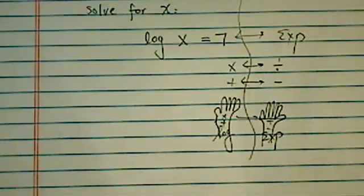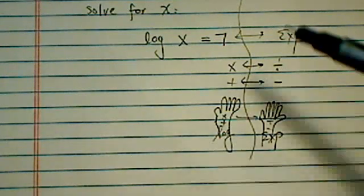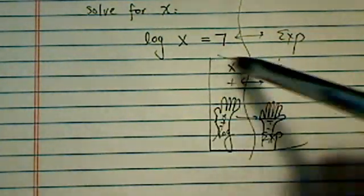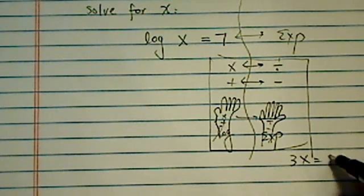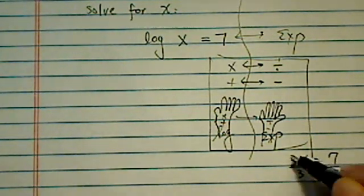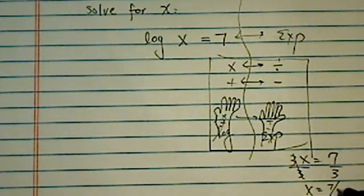So once you get this relationship going, then next thing you need to know is how to transfer back and forth. If we have 3x equal to 7, we're going to divide it by 3, okay, so then x becomes 7 over 3.